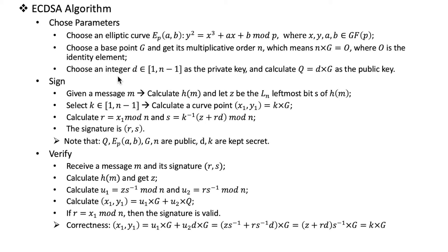We'll also cover how operations of points on an elliptic curve work, and we will make a video in the future talking about these mathematical concepts. Today we just focus on the digital signature algorithm. Now we set up the key pair: we choose an integer D between 1 and n minus 1, treat it as the private key, and then calculate Q as D times G, which is the public key.